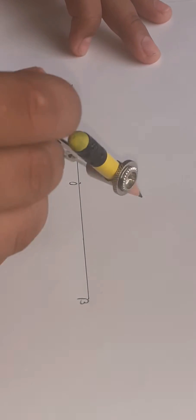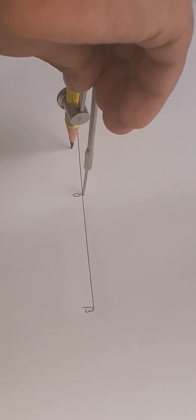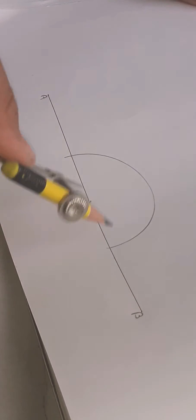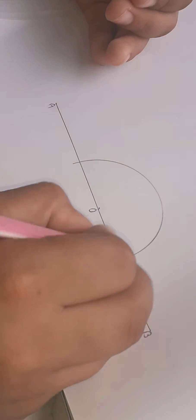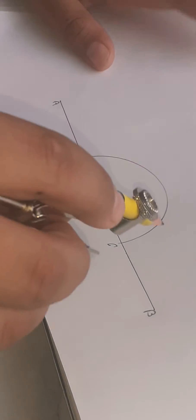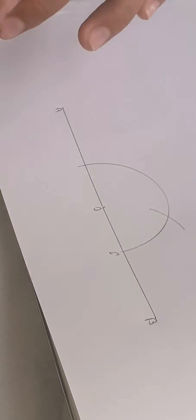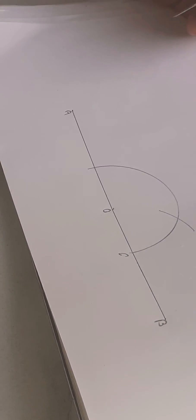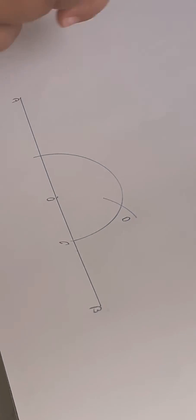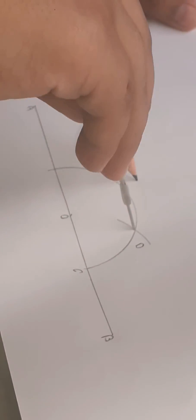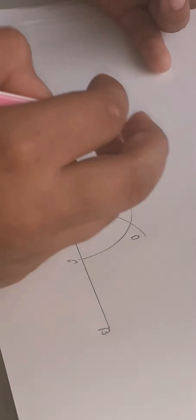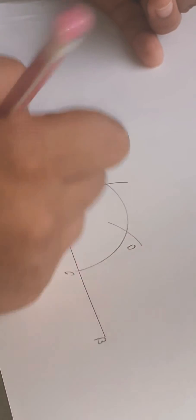Put your compass needle at O and draw an arc. Name it C. Put the compass needle at C and draw an arc. Name it D. Put the compass needle at D and draw an arc. Name it E.